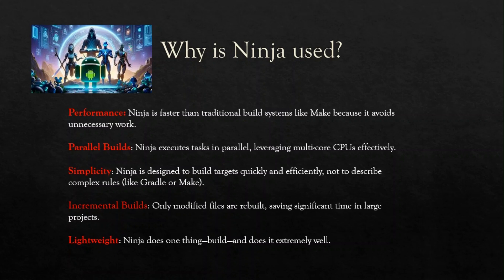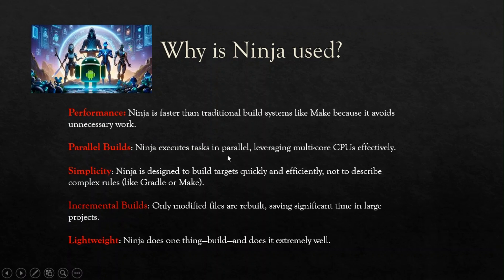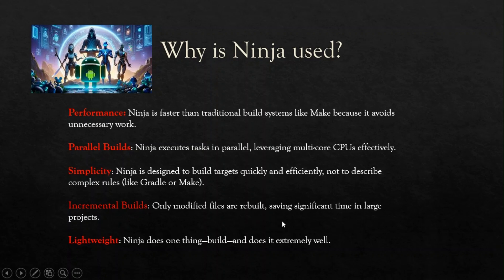Now let's see in detail why we use Ninja. First, performance: Ninja is faster than traditional build systems like Make because it avoids unnecessary work. Second, parallel builds — this is nothing but multitasking: Ninja executes tasks in parallel, leveraging multi-core CPUs efficiently. Third, simplicity: Ninja is designed to build targets quickly and efficiently, not to describe complex rules, keeping rules simple so that targets are built very quickly. Fourth, incremental builds: only modified files are rebuilt, saving significant time in large projects.